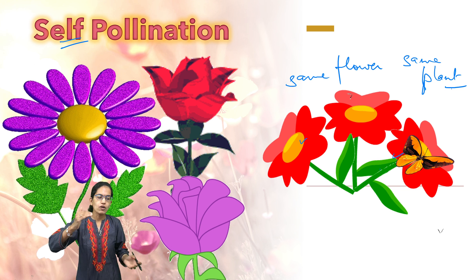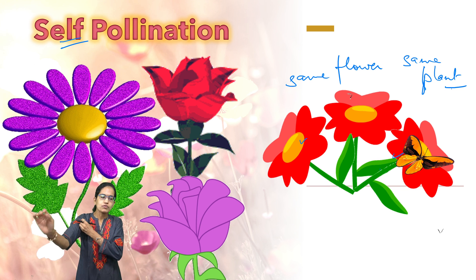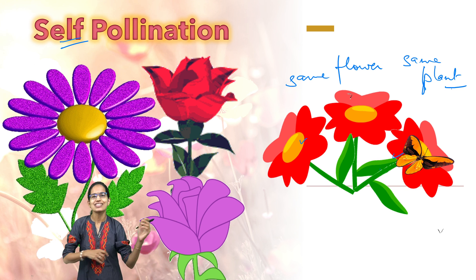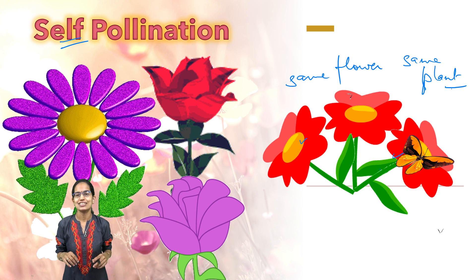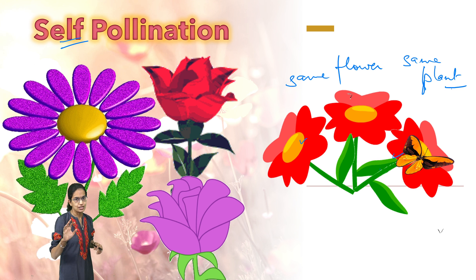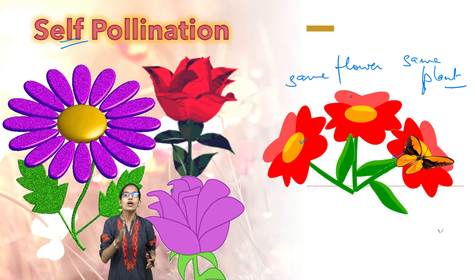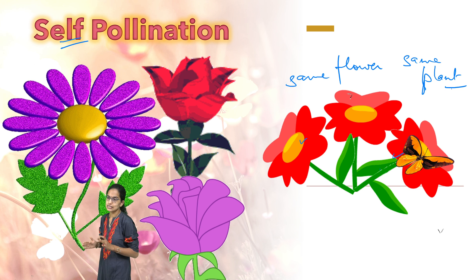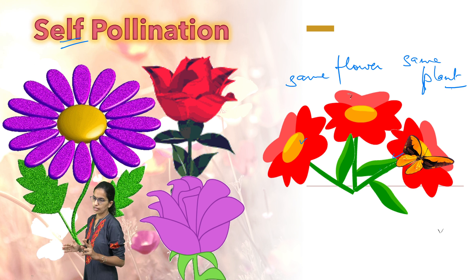However, one of the major issues with self-pollination is that new varieties cannot be produced and the resistance to disease decreases in the case of self-pollination.